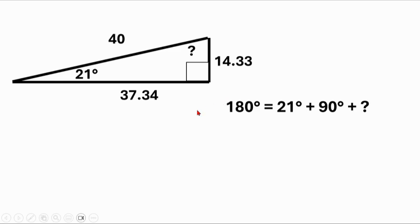We're going to add 21 and 90 together and then subtract 111 from both sides. That gives us 180 minus 111, which is 69. So the missing angle is 69 degrees.